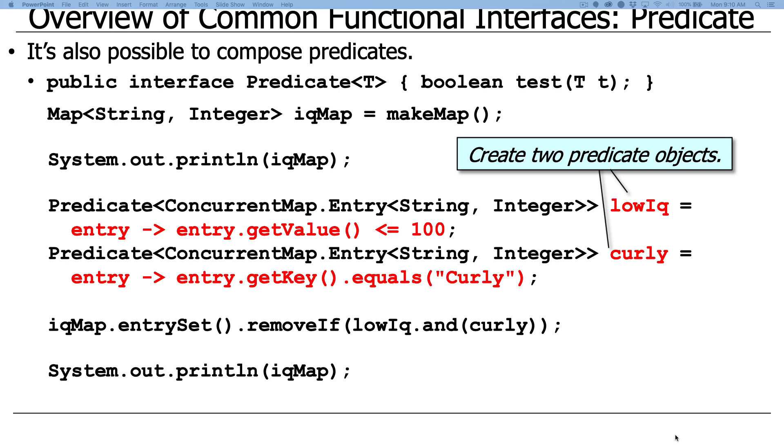where that's going to have the lambda expression entry dot get value less than or equal to 100. And then we're also going to define another predicate we call curly. And in this case, we're going to define a lambda expression where we're going to get the key from the entry and determine whether it equals curly. So this will return true if the particular entry is the curly entry. So this one's going to look at the value to see if the IQ is less than 100. This one will check to see whether the key equals curly.